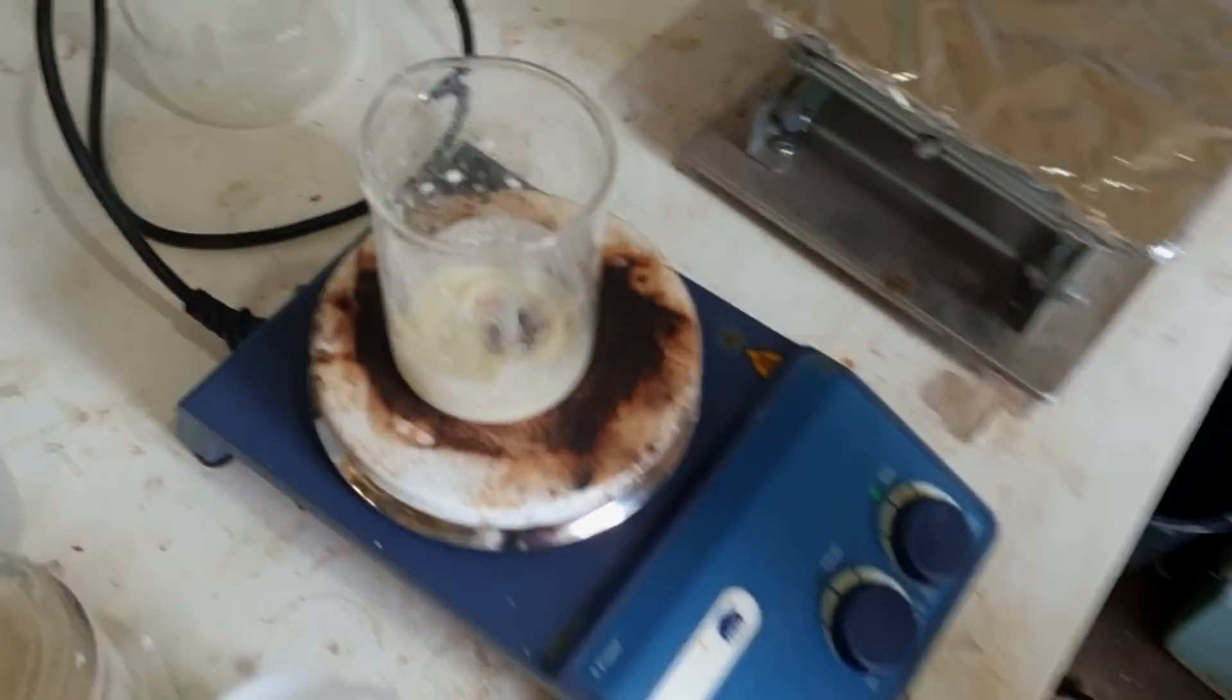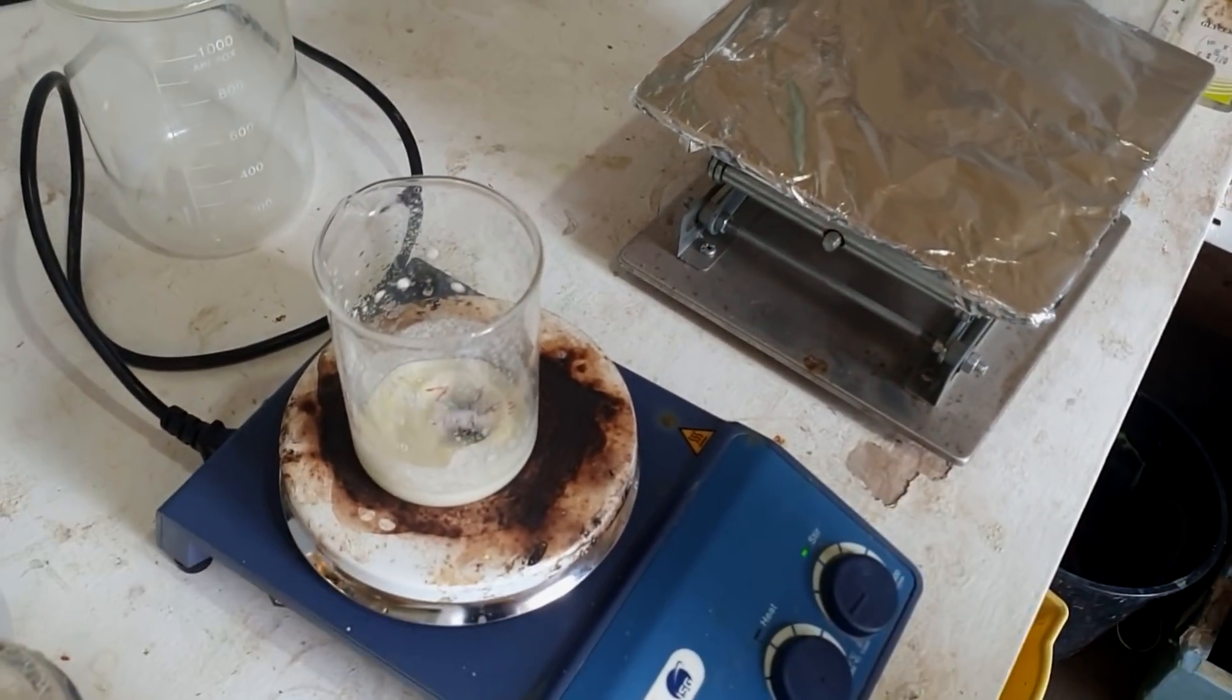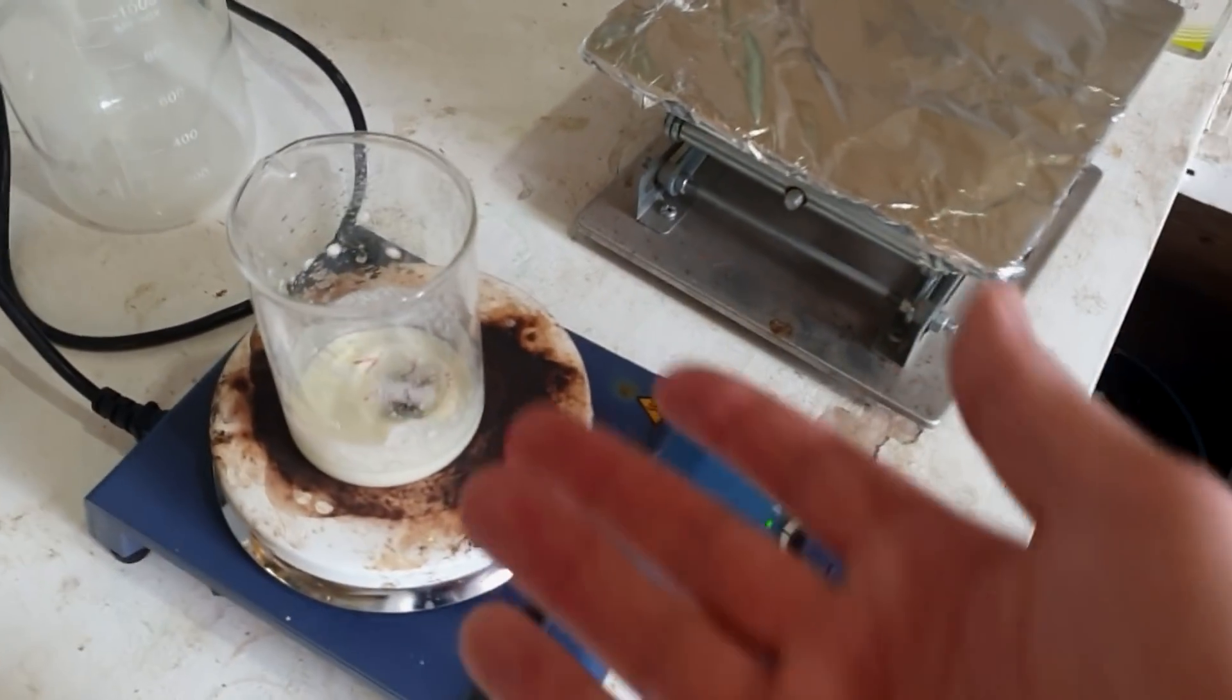Rather than getting every single last crystal out and fusing it to the bottom of the glassware, which will be a real pain to get out, I'm going to suspend it in some acetone. It shouldn't dissolve very much at all in acetone, and it should let us get a suspension that is filterable. It might even wash some of that yellow color off, who knows.